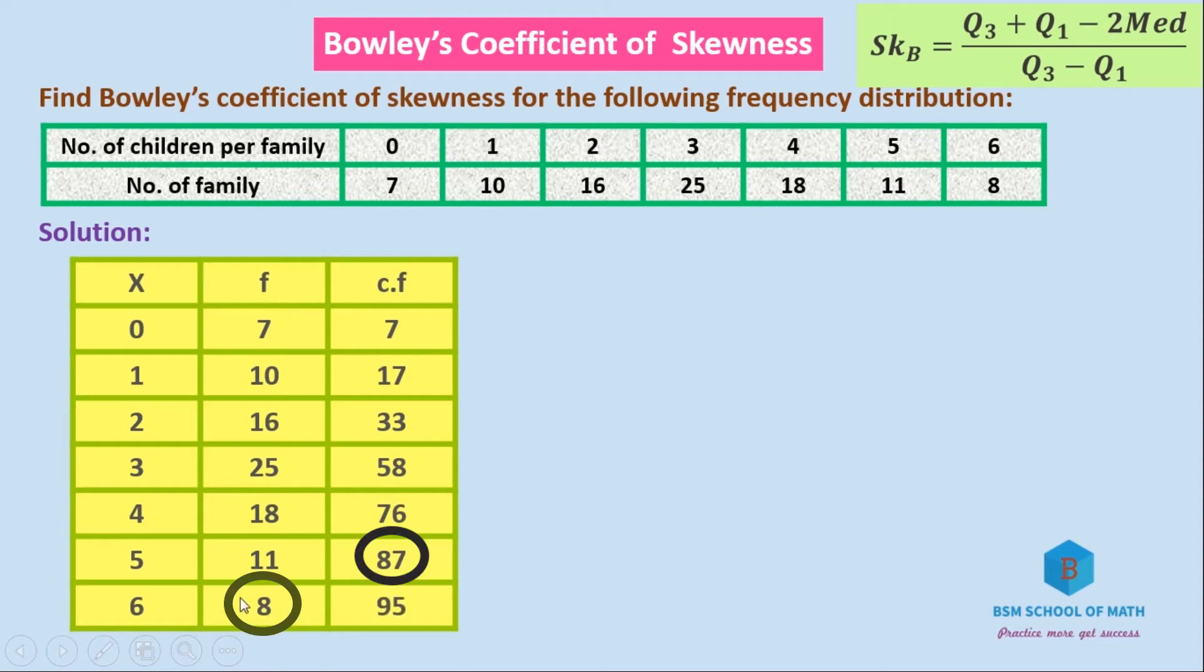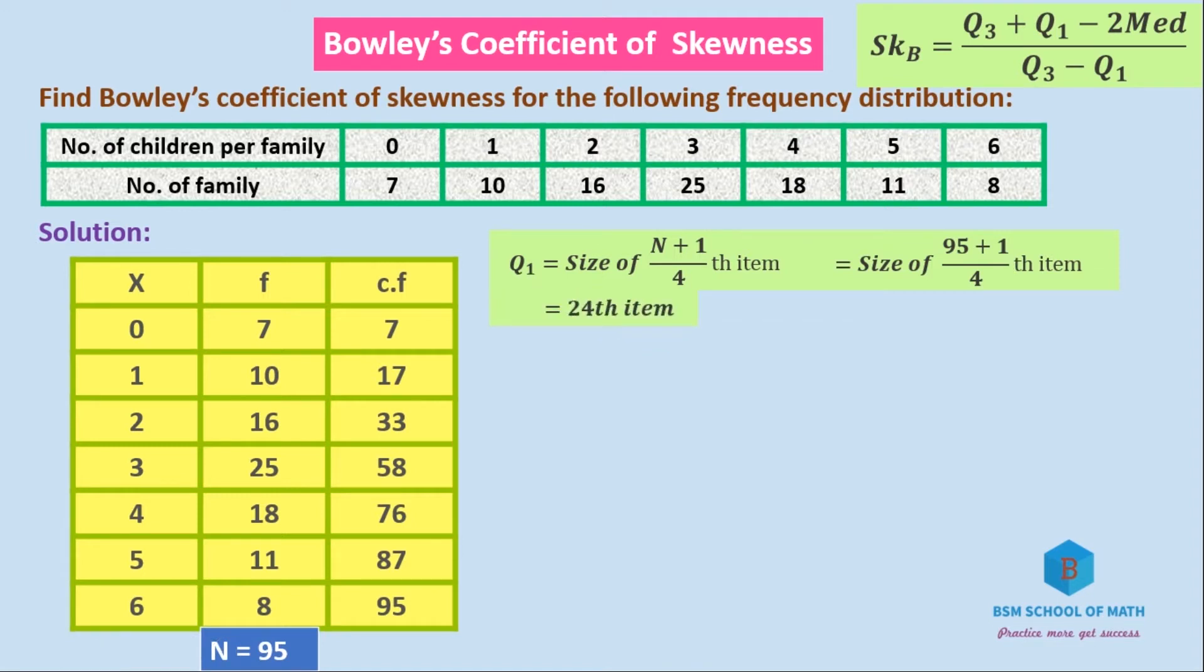N equals 95. Q1 is equal to the size of (N+1)/4 th item. So (95+1)/4 equals 96/4 which is the 24th item. The 24th item corresponds to X value of 2, so Q1 equals 2.